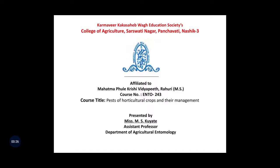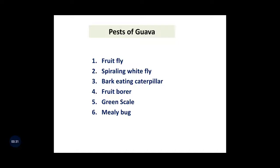In today's lecture, we are only studying the major pests of Guava. These are the major pests of Guava: first one is fruit fly, then spiraling whitefly, bark eating caterpillar, fruit borer of Guava, green scale of Guava, and the last one is mealybug of Guava.